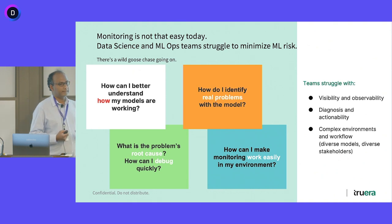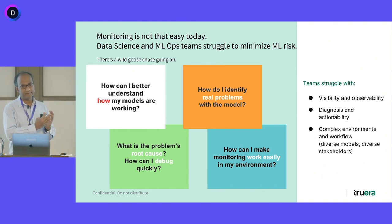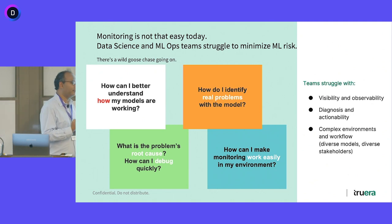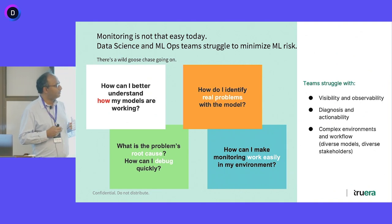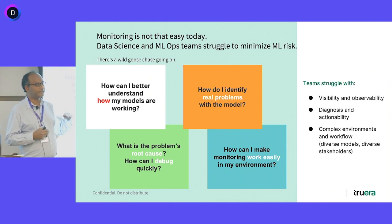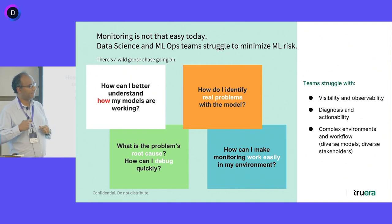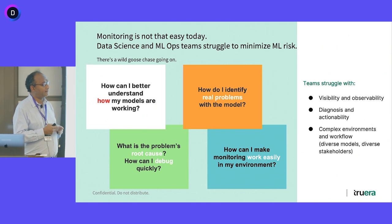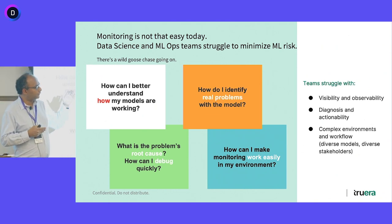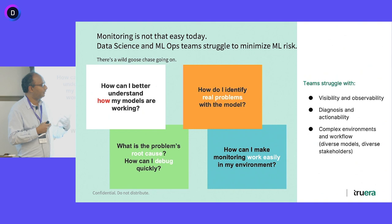Some of the struggles here: number one is with visibility and observability — keeping track of metrics, making sure when the model is starting to go haywire you're getting alerts and you know you should pay attention. But that's not where we should end; that's just the first step. The second step is really the deeper diagnosis, root cause analysis, and actionability based on that. That's the workflow I'll walk you through with examples.